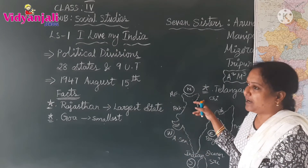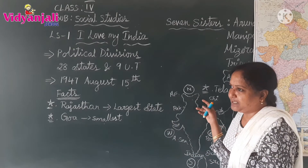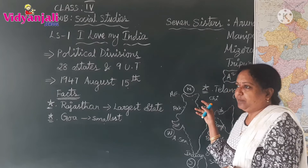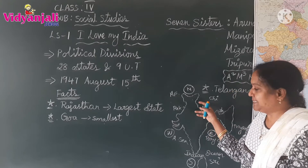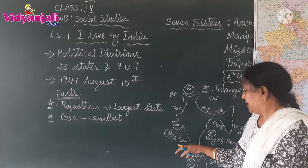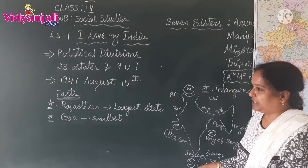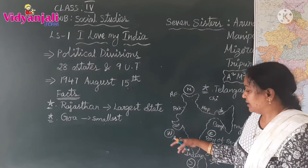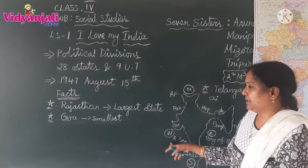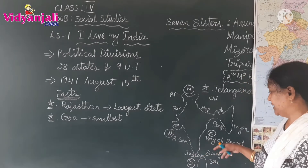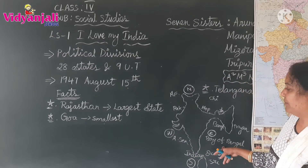These are the boundaries of India. In the North and North-East, countries are the boundaries of India. In the South, Indian Ocean. On the West, Arabian Sea. In the East, Bay of Bengal.